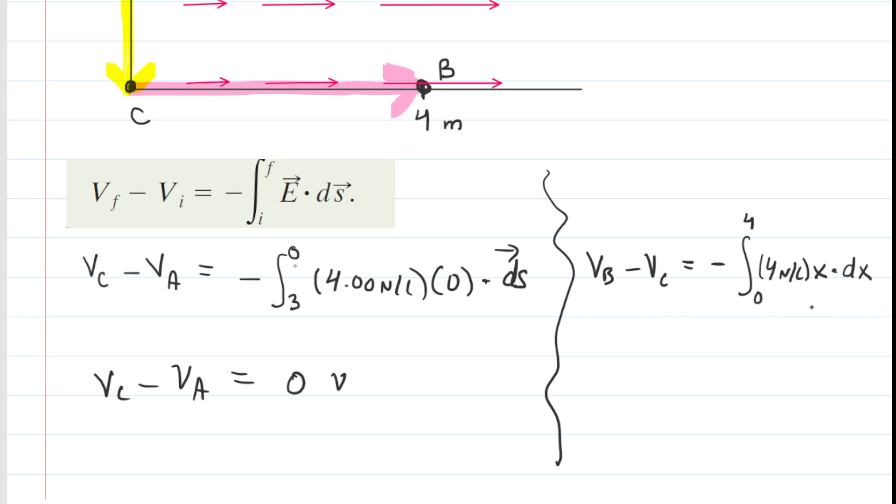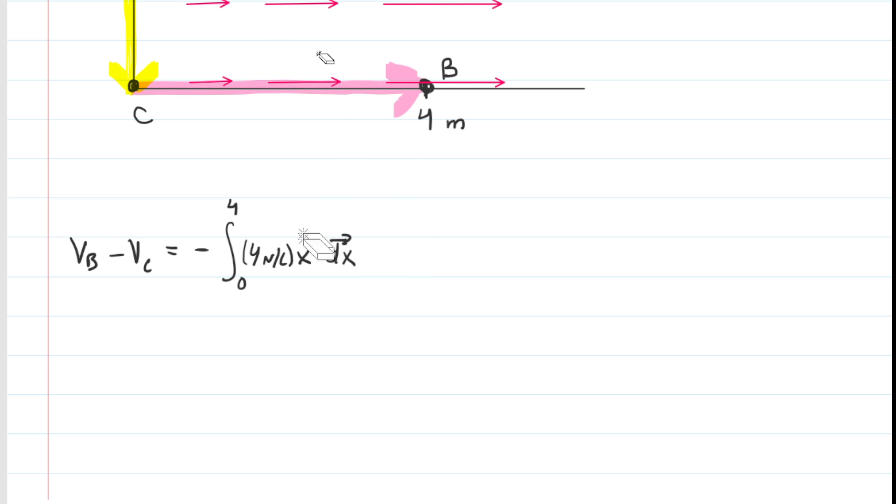Now we have this dot product here. We're going to talk about that momentarily. In a dot product, you can actually rewrite it by taking the electric field magnitude, which is the four newtons per coulomb times x, multiplied by dx and then multiplied by the cosine of the angle between them. Now let's not forget, as we're moving from C to B, the electric field is pointing in this direction. Also, as we move from point C to B, our displacement vectors, which we call dx, since we're moving in the x direction, also point to the right. The angle between those two vectors is zero. The cosine of zero is one, so we can actually eliminate that cosine term from our equation.